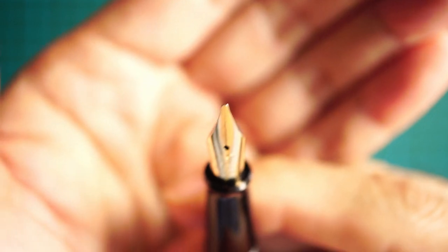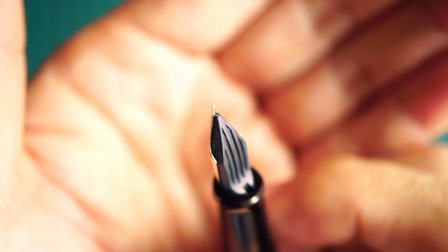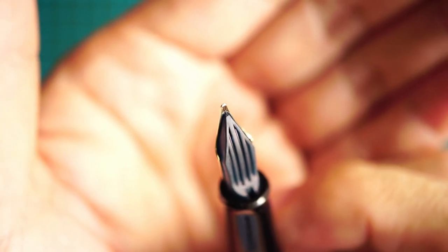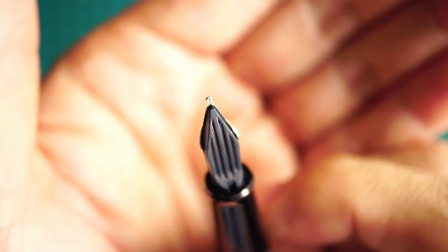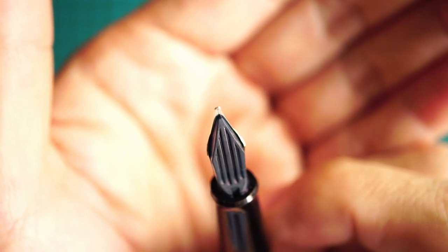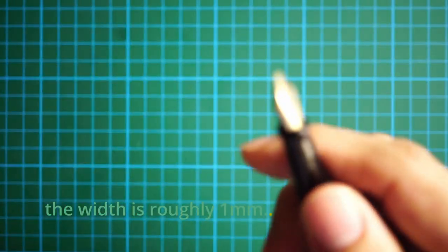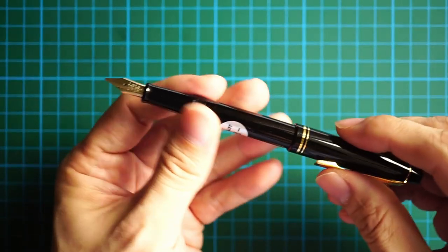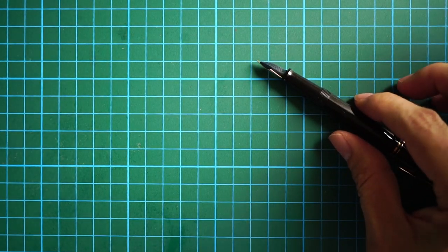And it doesn't look like a typical broad nib, in that it looks a little bit more like an italic nib to me. Kind of like a half stub or italic. And when you see in the writing, what I'm going to do right now, you can actually see the characteristics of this nib.